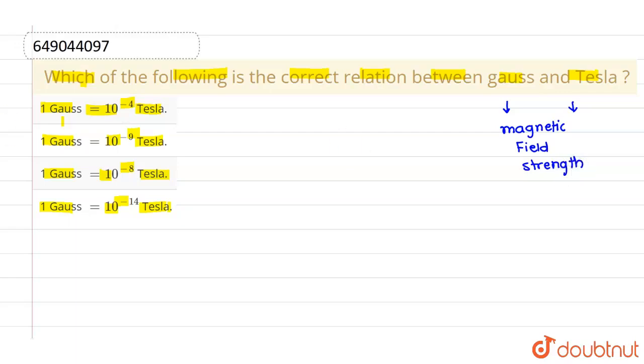And you must remember the relation between these two quantities: 1 Gauss is equals to 10 to the power minus 4 Tesla, or you can say that 1 Tesla is equals to 10 to the power 4 Gauss.